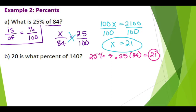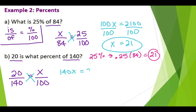So I'm going to do the is over the of again. So 20 is what percent of 140? So the 20 is the is of 140 is my percent, which I'm trying to figure out, over 100. And once again, I can go ahead and cross multiply. That gives me 140x, equals 20 times 100 is going to give me 2,000.